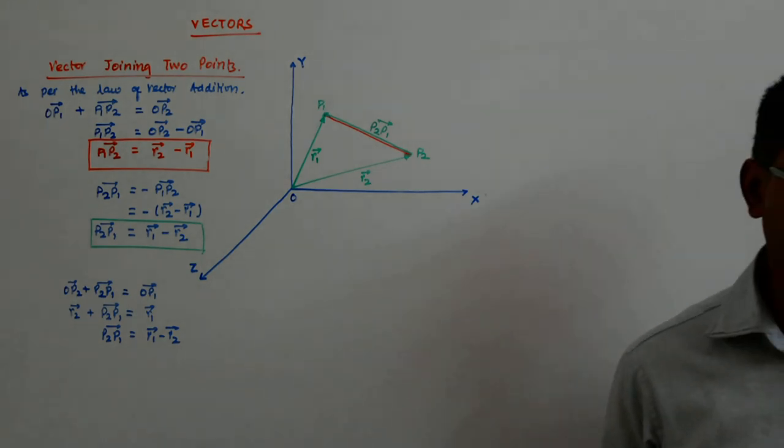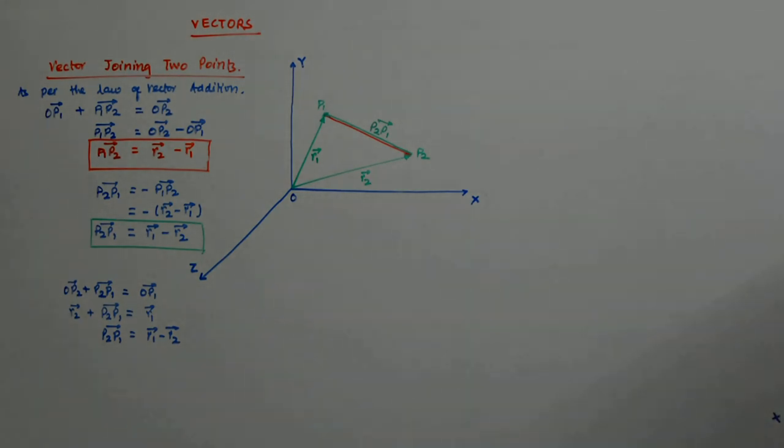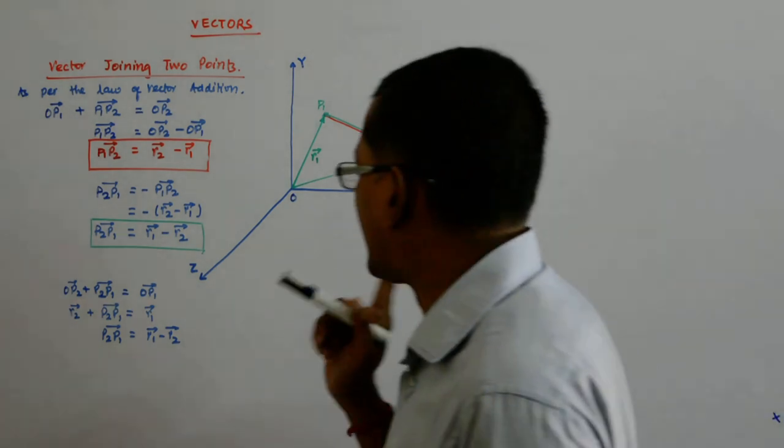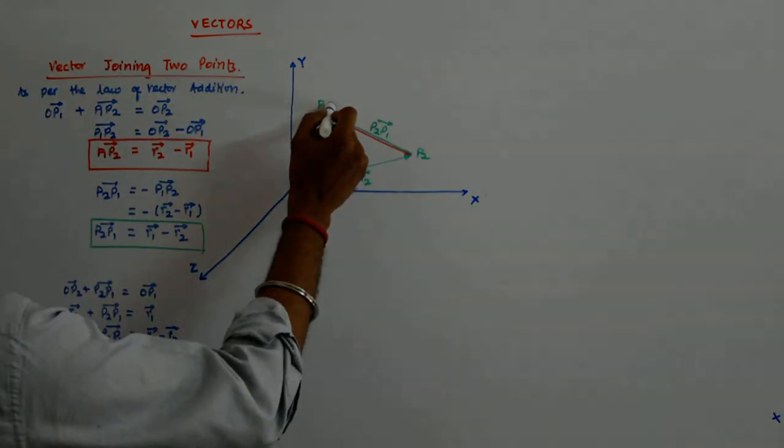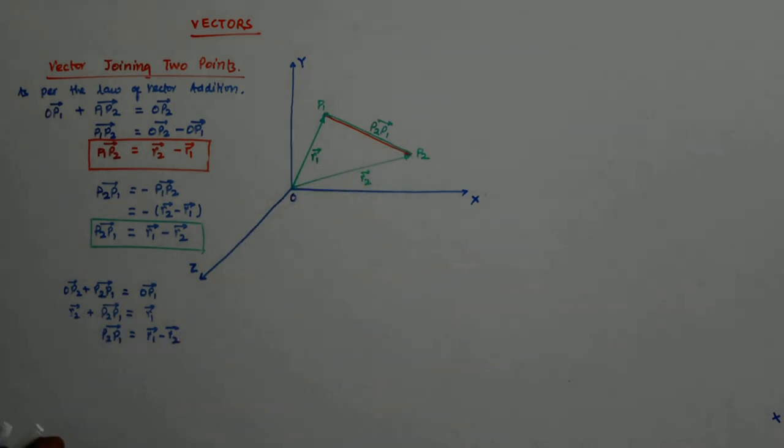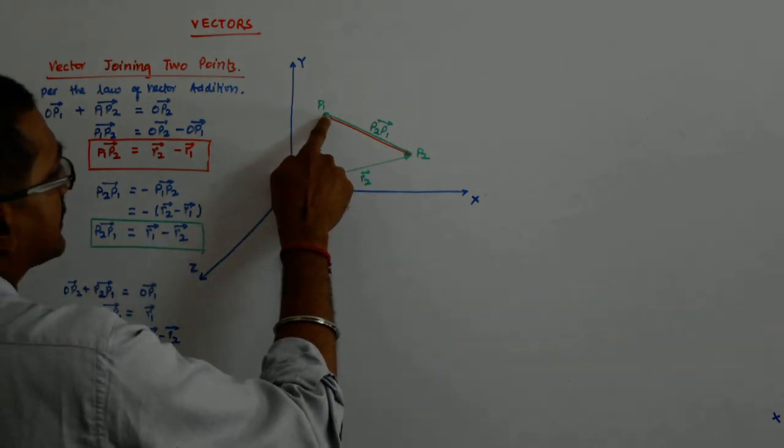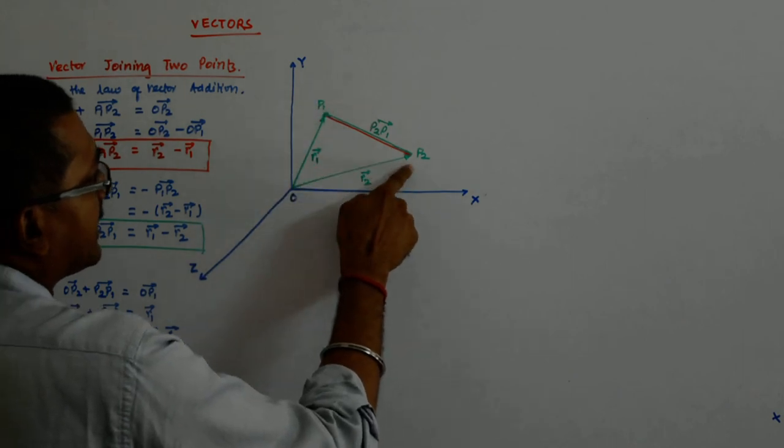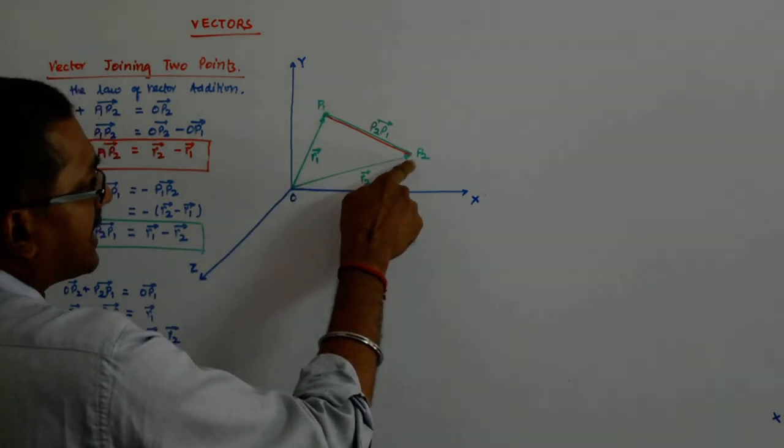So if I have two points, let us say, I have two points given and I am asked to find a vector joining these two points in a given direction, then I will utilize this. You should understand one thing that if these are two points, then the vector, if I want P1P2, then I should do what? I should see that the head is there.